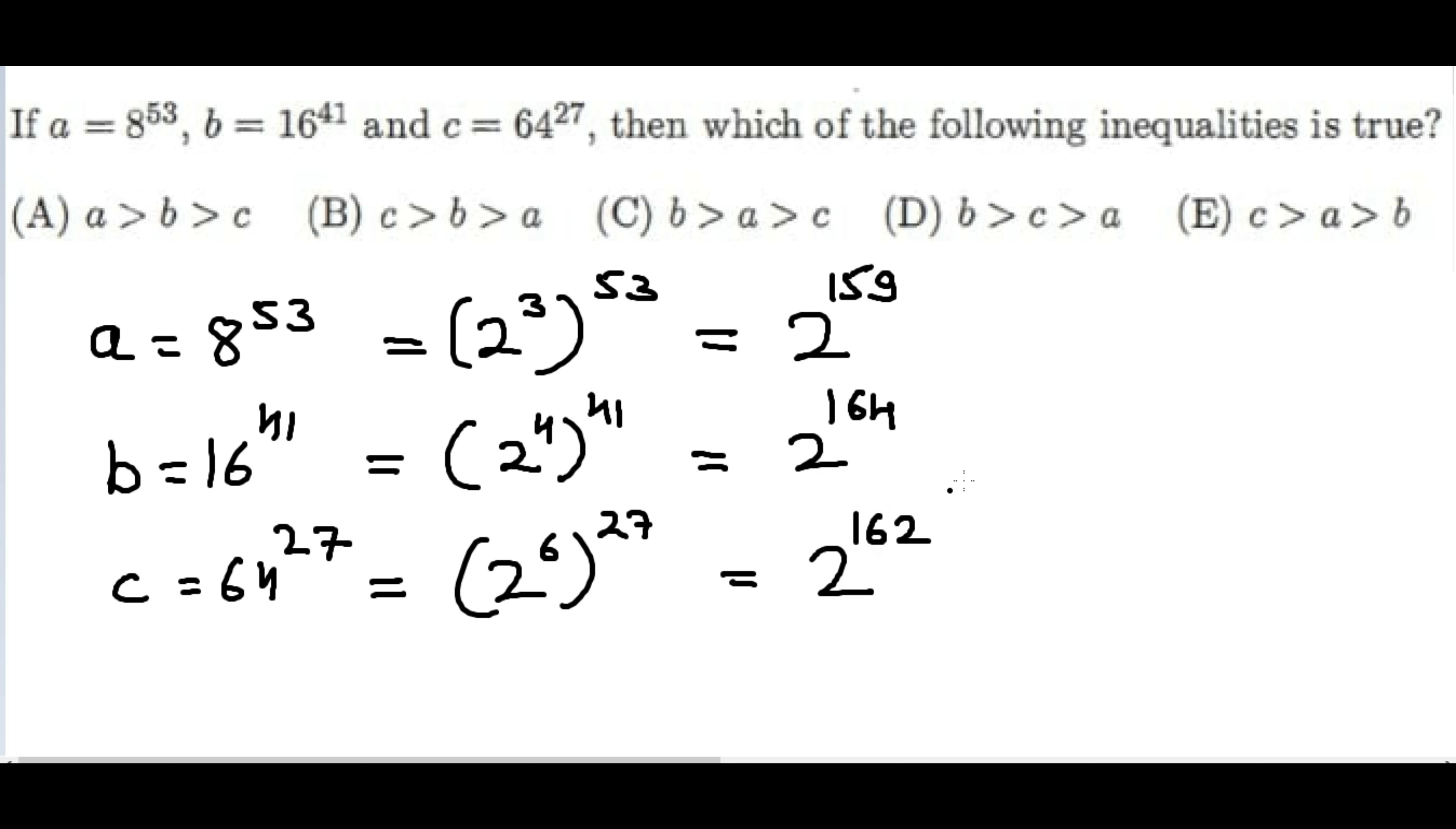As you can see, this is the biggest and this is the smallest. We can write them in order: b is the greatest one, then we have c, and then we have a. So the option which resembles this situation is option D.